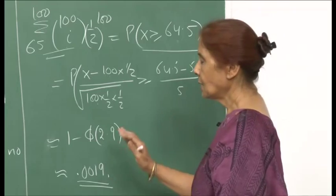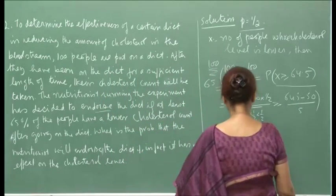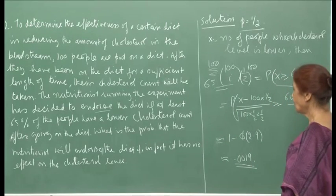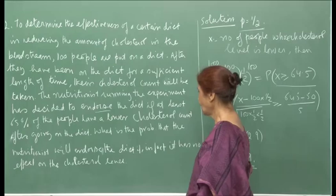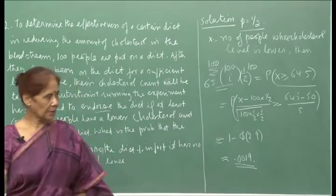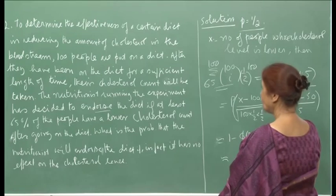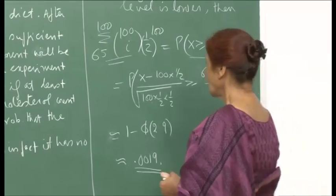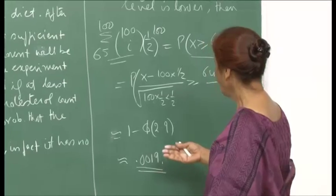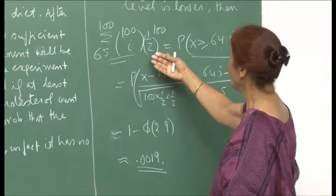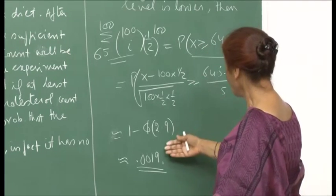This is very small. The chance that 65 out of 100 people will have their cholesterol lowered, with p = 0.5, is very low. Therefore, the diet will not get endorsed. Since the diet was probably having no effect on the cholesterol level, it does not get endorsed — no loss. This is how one can look at different situations. These two examples reinforce the idea of computing messy discrete probabilities by approximating through continuous random variables, making the task easy.